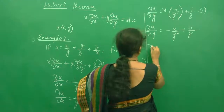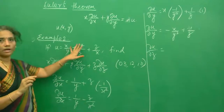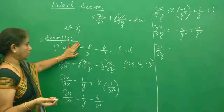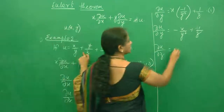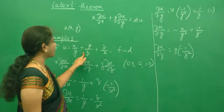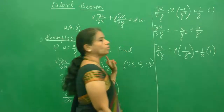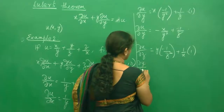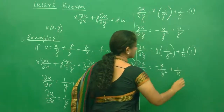Now I find ∂u/∂z. When doing ∂u/∂z, x and y are constant. So the x/y term is a constant — its derivative is 0. For y/z, y is a constant but z is a variable, so 1/z derivative is negative 1/z squared. For z/x, 1/x is a constant and derivative of z is 1. Therefore, ∂u/∂z equals minus y/z squared plus 1/x.